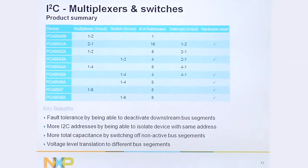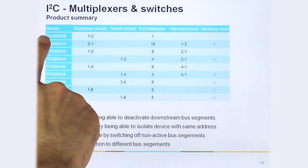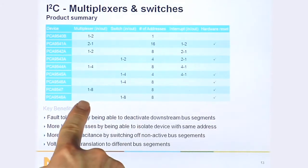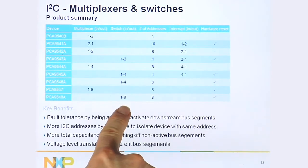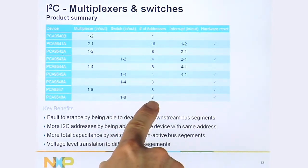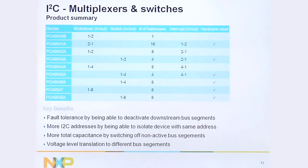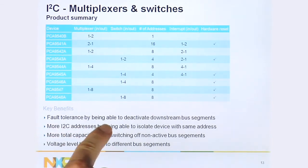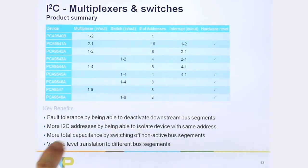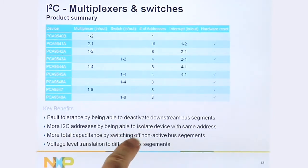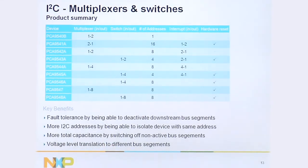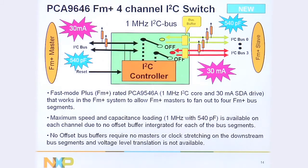Here's a summary of the multiplexers and switches. Multiplexers allow you to only have one channel selected at a time, while switches can have multiple channels selected at a time. These are slave devices with a number of address options, and support either interrupts or hardware reset. The key benefits are fault tolerance and isolation — the main use in larger systems — address conflict resolution, isolating capacitance by switching off non-active buses, and voltage level translation.